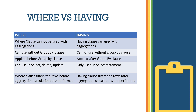We will focus on WHERE versus HAVING. WHERE can be used with SELECT, DELETE, and UPDATE statements. HAVING can only be used with the SELECT statement. WHERE clause filters the rows before aggregation calculations are performed. HAVING clause filters the rows after aggregation calculations are performed.